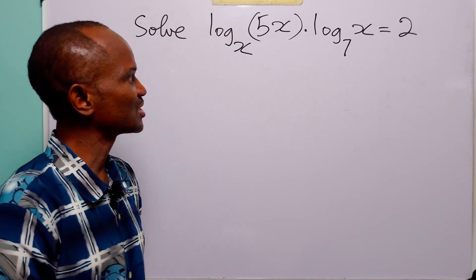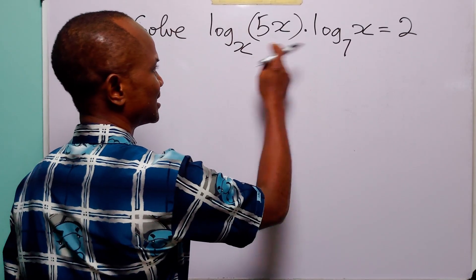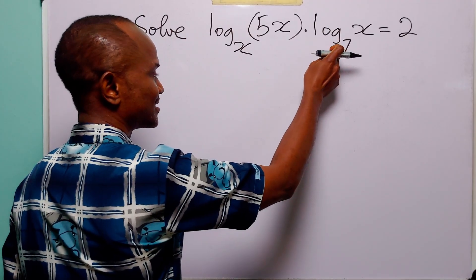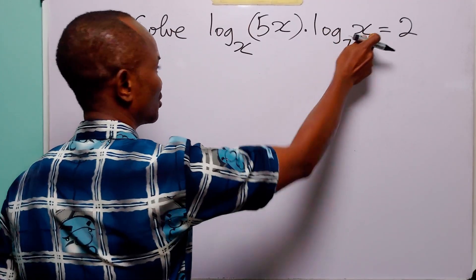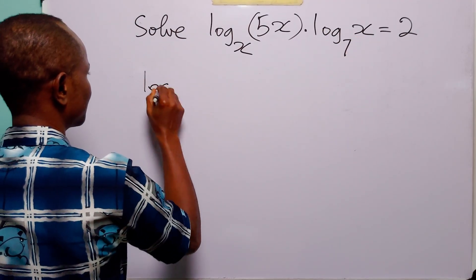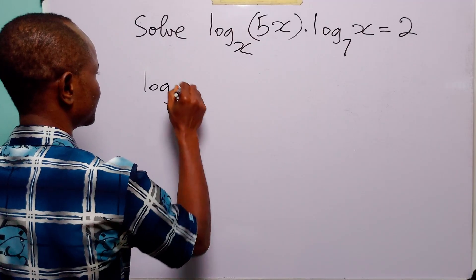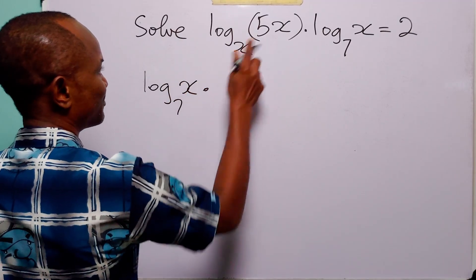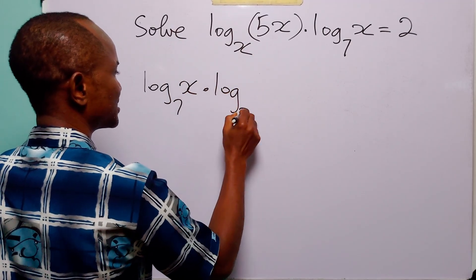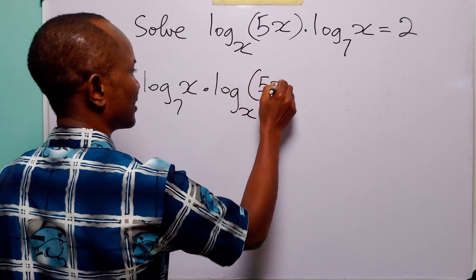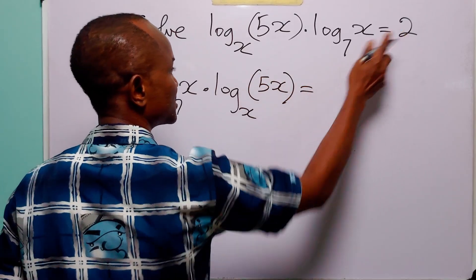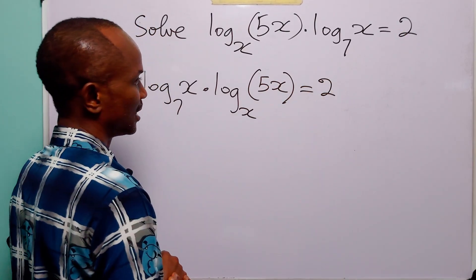In the first method, we start by rearranging the equation. We will write this term first — that is log base 7 of x, multiplied by log base x of 5x — and this is equal to 2.